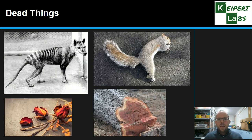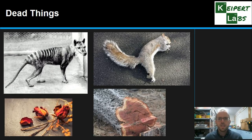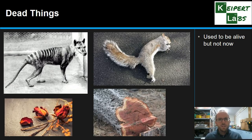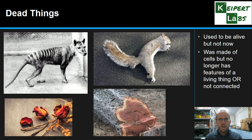Now we have a look at some dead things. The difference between living and dead is probably fairly concrete to us, but it's being able to distinguish between something that's dead and something that was non-living that's important here. For something to be considered a dead thing, it used to be alive but is not now. At some point in its existence it was living or part of a living thing. It is made up of cells but either no longer has the seven characteristics of a living thing, or is no longer connected to the remains of a living thing.